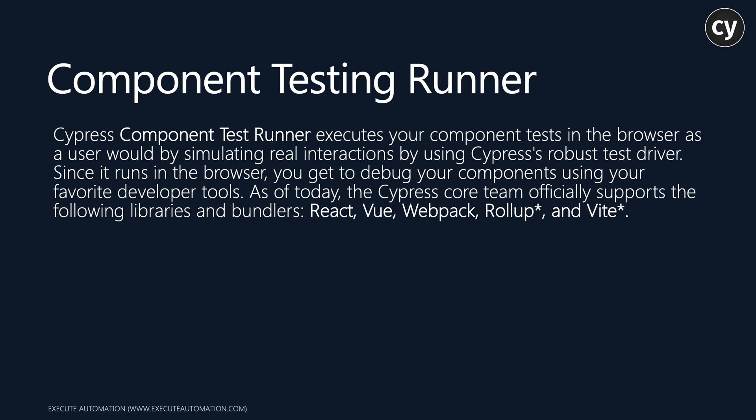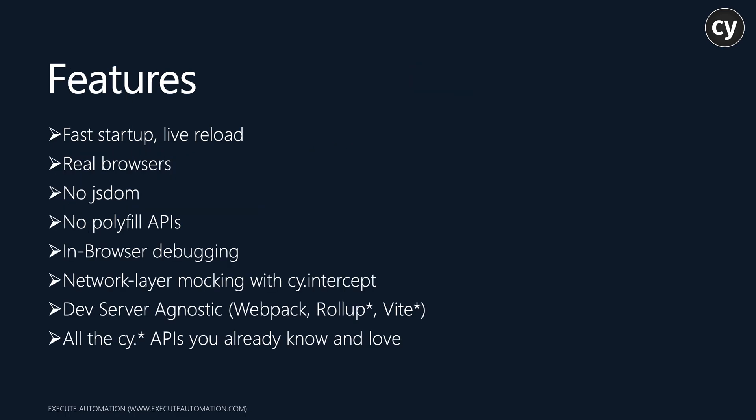In this section we're going to be focusing on the React bundler support of Cypress. Component testing comes with a lot of features: fast startup, live reloads or hot reloads, real browser support, no JS DOM required like you'd use in unit testing, and no polyfill API required. There's an in-browser debugging experience — that's the power of Cypress itself. There's also network layer mocking with cy.intercept to verify XHR, it's dev-server agnostic across Webpack, Rollup, or Vite, and it includes all the Cypress API support we already know.